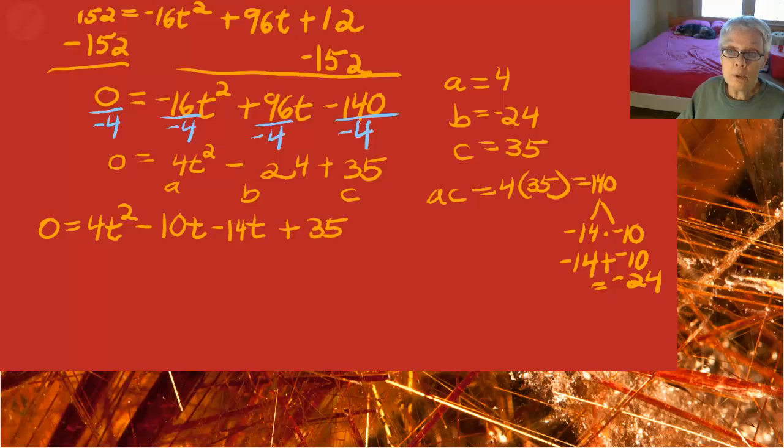So 0 is going to equal parentheses 4t squared minus 10t parentheses closed, plus parentheses negative 14t plus 35.